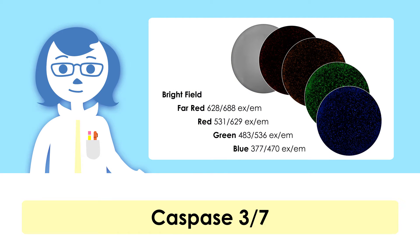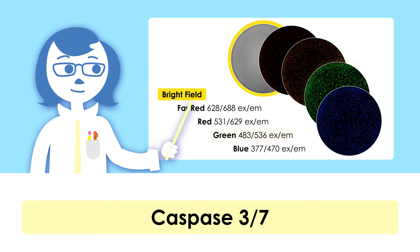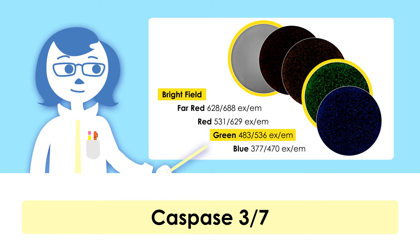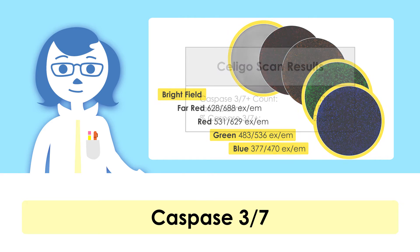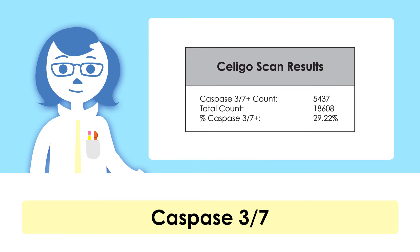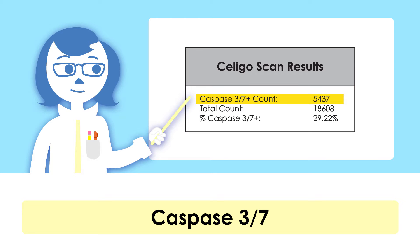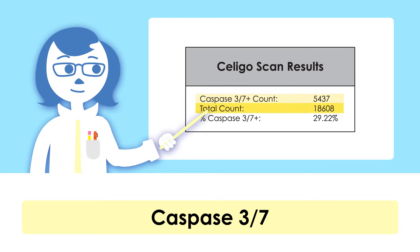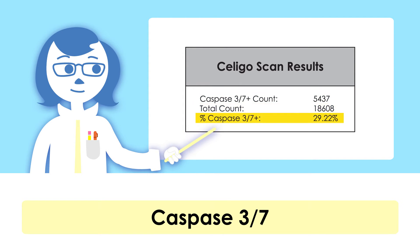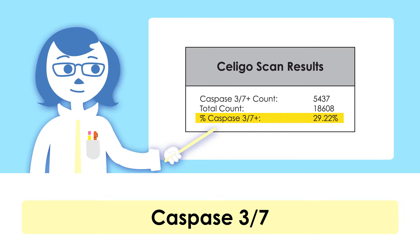After staining, the Celigo was used to acquire Hoechst, brightfield, caspase 3-7 green, and Hoechst blue images. The Celigo software automatically analyzes the captured images and reports the total number of green caspase-positive cells, the total number of blue Hoechst-positive nucleated cells, and the percent of apoptotic cells. The captured brightfield images were not analyzed and were used to monitor cell morphology.